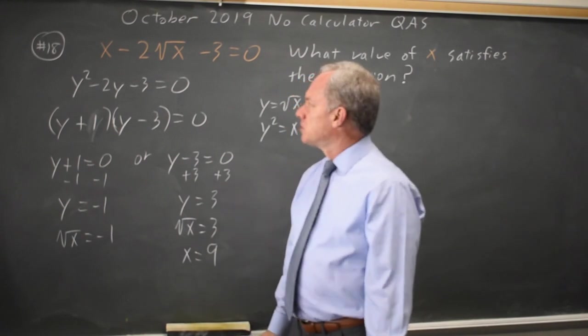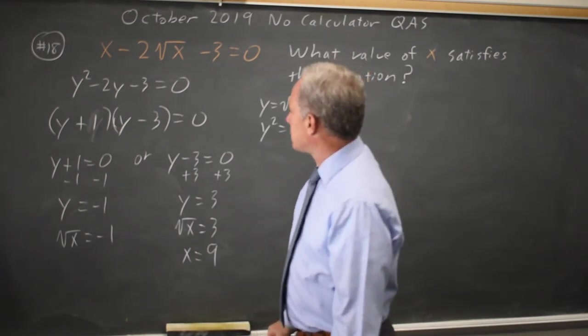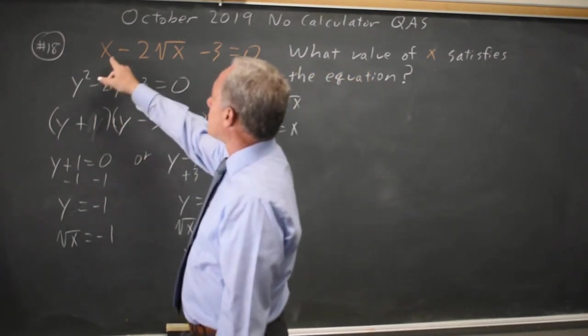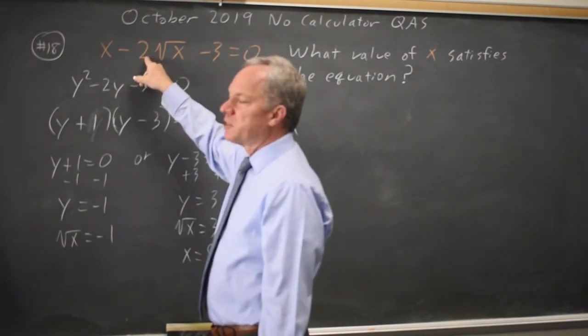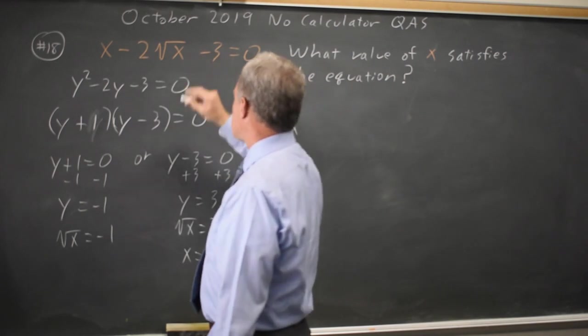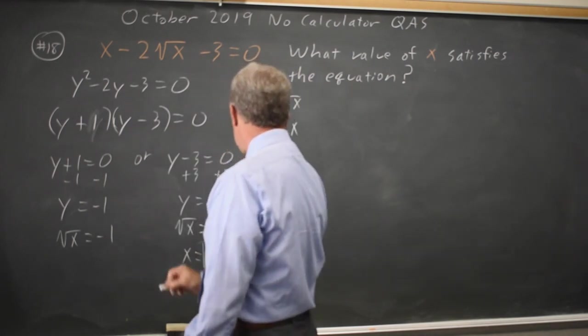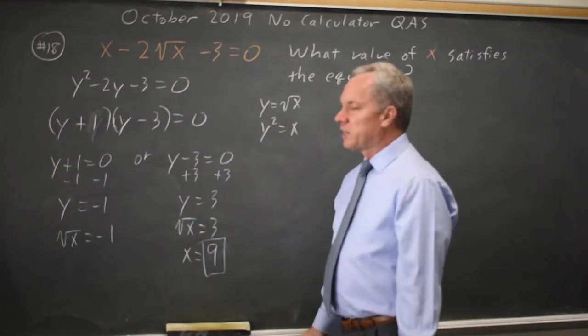Now, since I was dealing with square roots and squaring stuff, let's check that. In fact, 9 minus twice root 9, so 9 minus 2 times 3 is 9 minus 6 is 3, minus 3 is 0, so yes, that does work. The answer is 9.